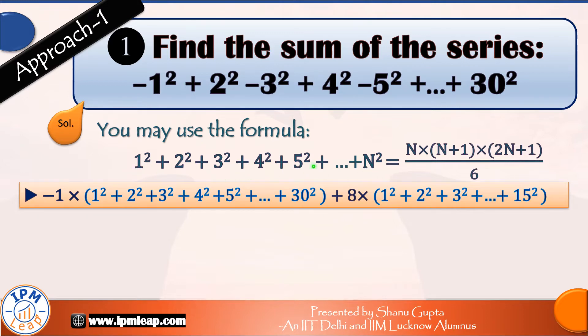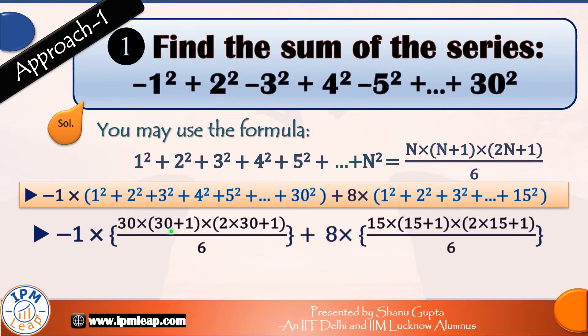For the first series, n is equal to 30. So applying the formula, sum of first 30 squares is 30 into 30 plus 1 into 2 into 30 plus 1 upon 6.